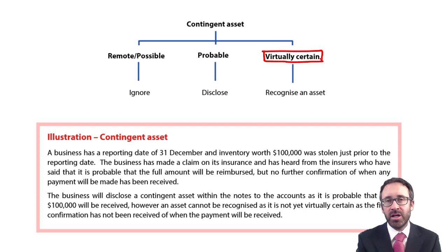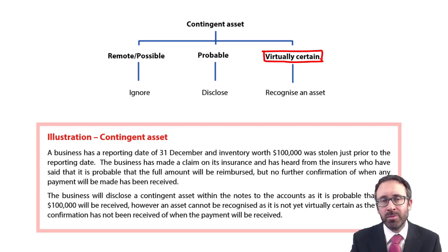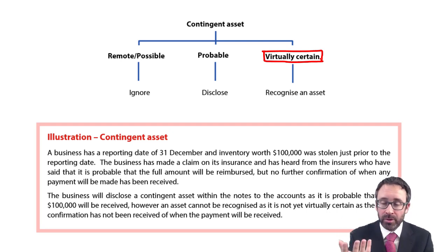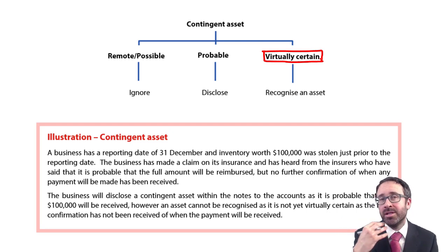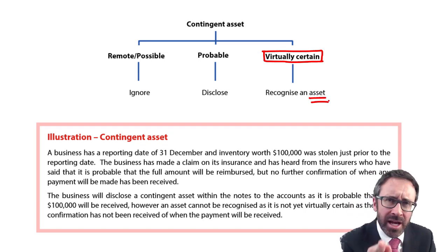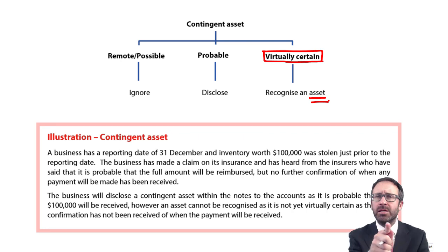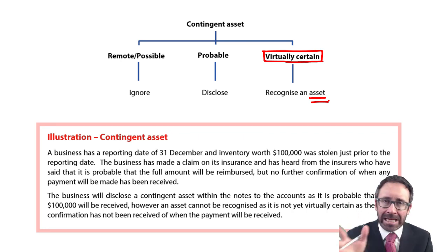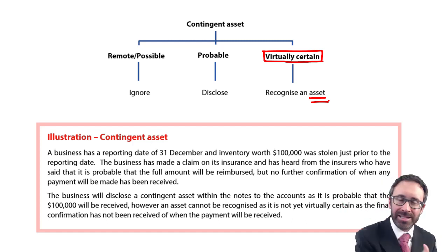If it is virtually certain that you're going to receive the cash, or be given some inventory, or whatever asset it might be — PPE, and usually in exam questions it tends to be cash through an insurance claim — only once it is virtually certain do we recognize an asset. Don't ever say 'recognize a contingent asset.' Once it's virtually certain, it loses its contingency. It's not contingent on anything anymore and it is simply an asset.